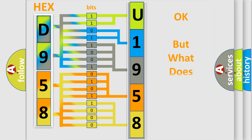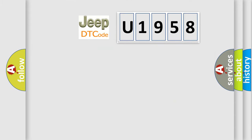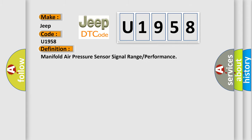We now know in what way the diagnostic tool translates the received information into a more comprehensible format. The number itself does not make sense if we cannot assign information about what it actually expresses. So, what does the Diagnostic Trouble Code U1958 interpret specifically for Jeep car manufacturers? The basic definition is: Manifold Air Pressure Sensor Signal Range or Performance.